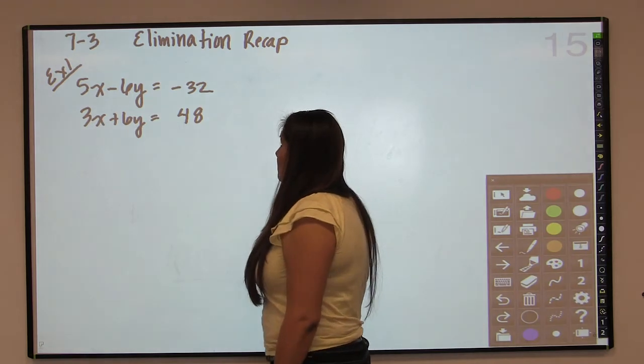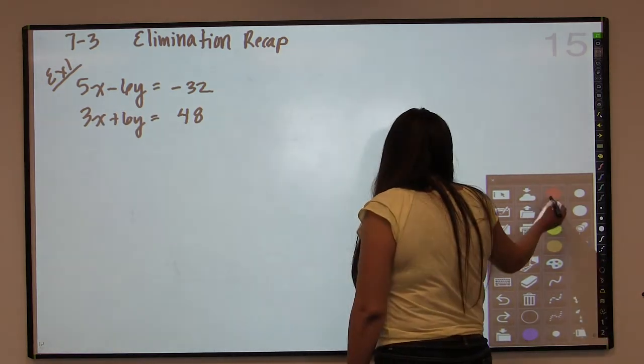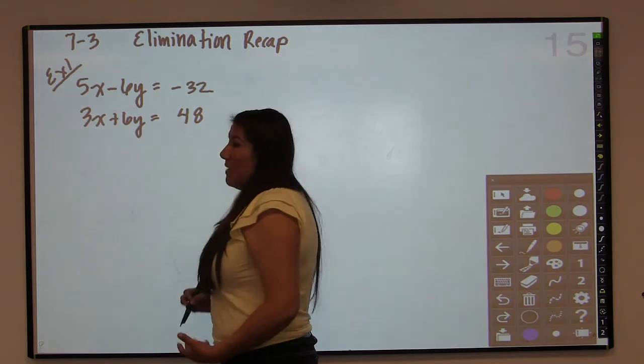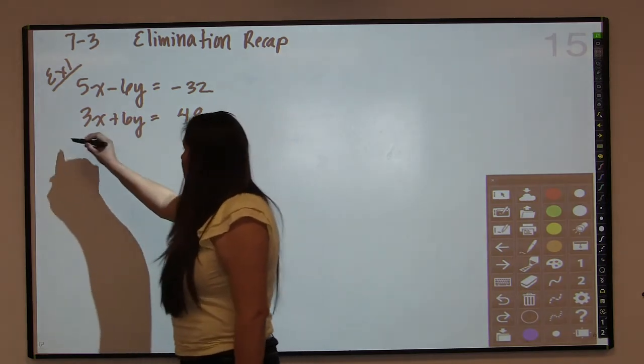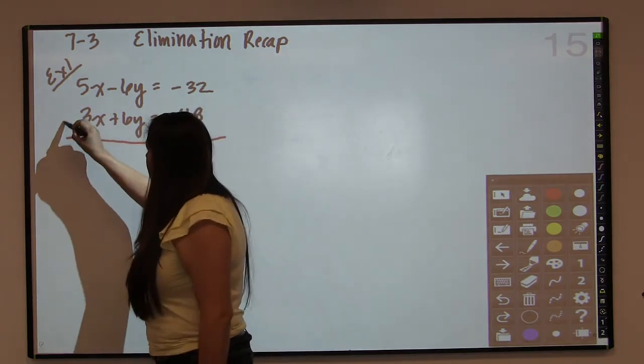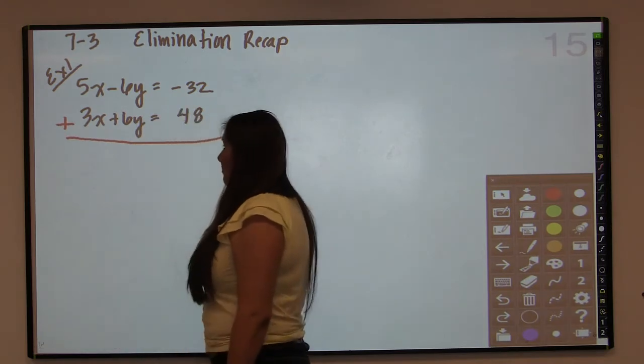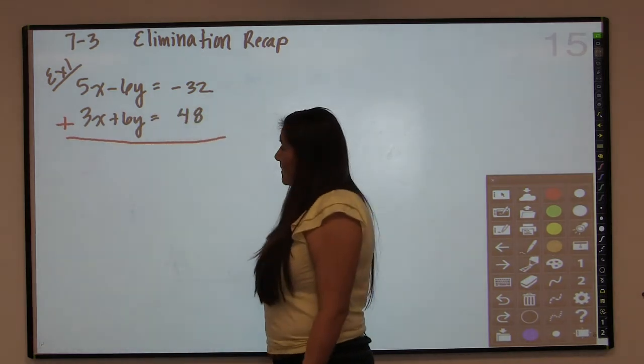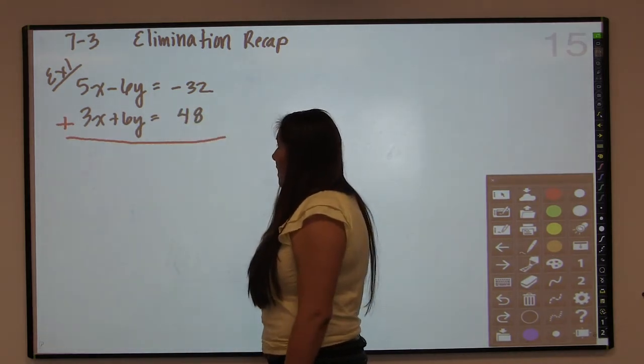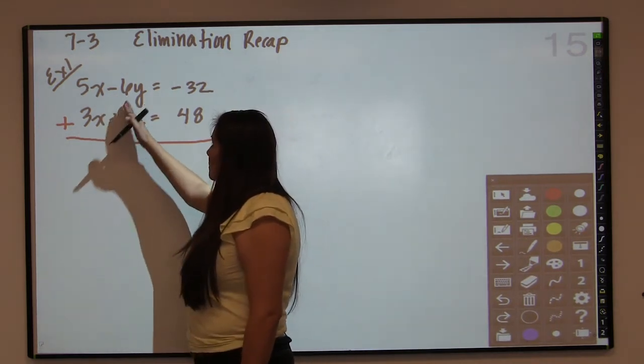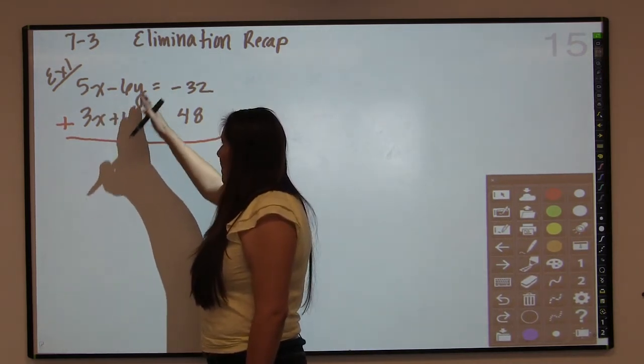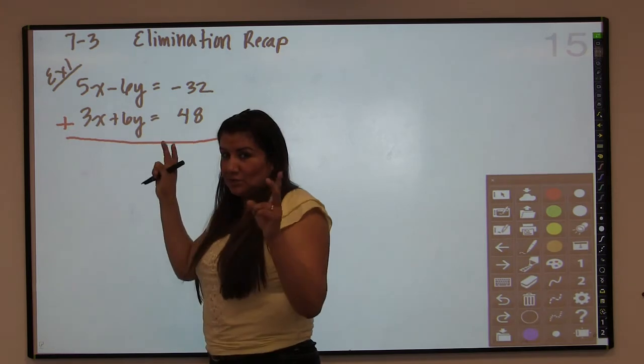And remember, elimination means that you're going to be eliminating a variable from this equation. So the method of doing that is going to be to add the equations together. This is the easiest example because it doesn't require any work on our part, any prep. You've got negative 6y and positive 6y, and when you add the two equations together, they're going to cancel or eliminate.